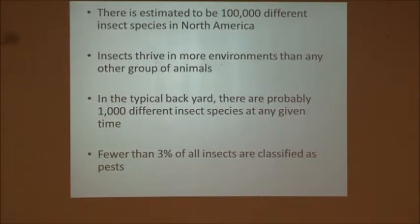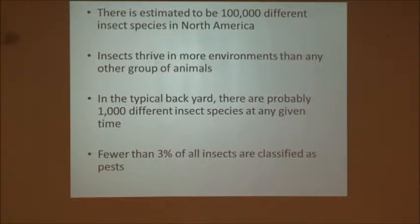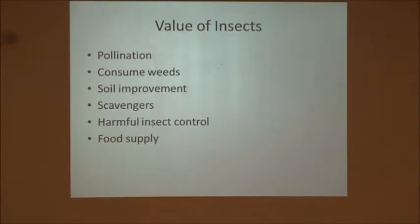That's a lot of different types of bugs. They thrive in more environments than any other group of animals. Typically in your backyard you might have a thousand different types of insect species. That could be a good or bad thing, but fewer than three percent of all insects are actually classified as pests — so only really three percent of that hundred thousand are a problem.